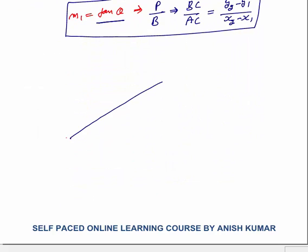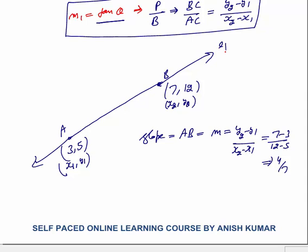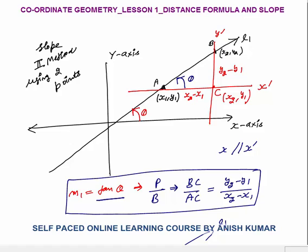For example, given points a(3, 5) and b(7, 12), slope M = (12 - 5)/(7 - 3) = 7/4. So slope can be calculated by two methods: either tan(θ) if the angle is given, or (y2 - y1)/(x2 - x1) if two points are given.